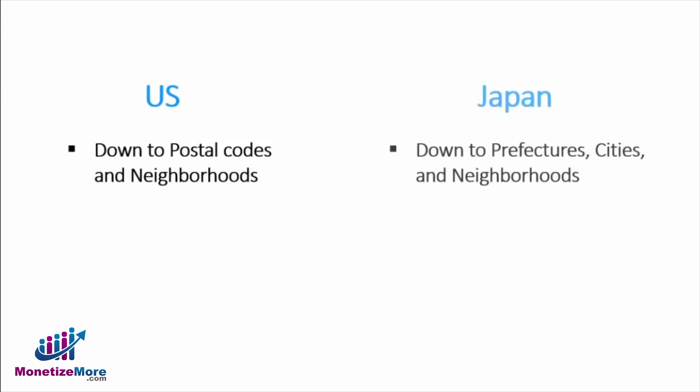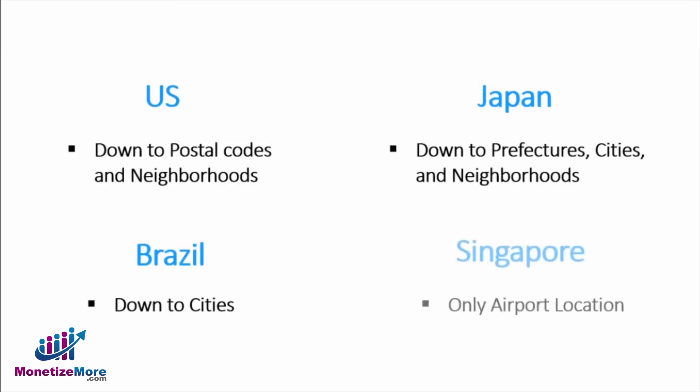Japan can go as specific as specifying prefectures, cities, and neighborhoods. On the other hand, for Brazil, the most specific you can target is by city. In Singapore, you can only target the airport location, as no other regions are available.